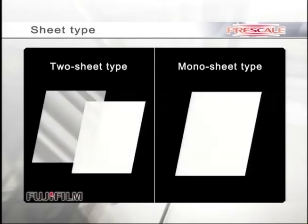Another is a monosheet type for the pressure range between medium and super high, 10 megapascal to 300 megapascal.